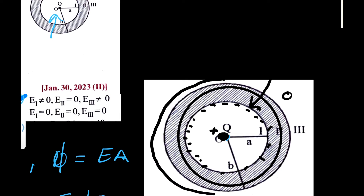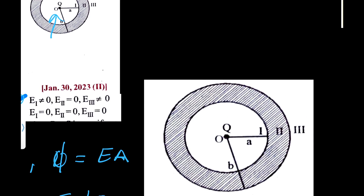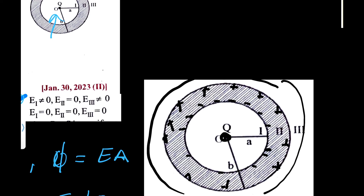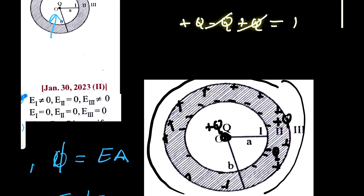For Region 3, the outer region, I draw a Gaussian surface outside the shell. The positive charge q induces a negative charge on the inner surface and a positive charge on the outer surface. So the net charge enclosed is: plus q (the original charge), minus q (inner surface), and plus q (outer surface). The minus q and one plus q cancel, leaving a net enclosed charge of q — meaning the electric field in the outer region is not zero.